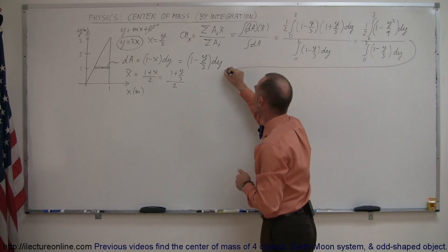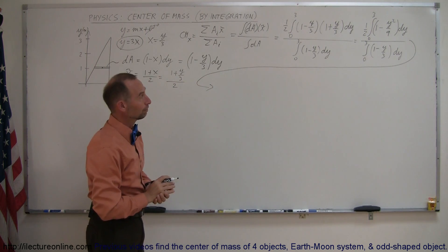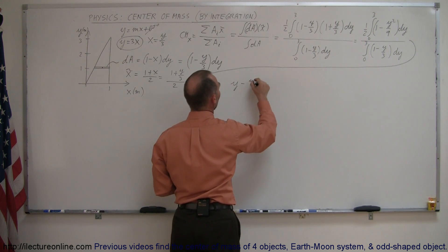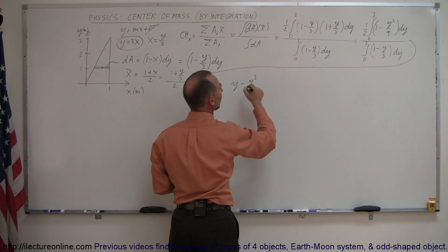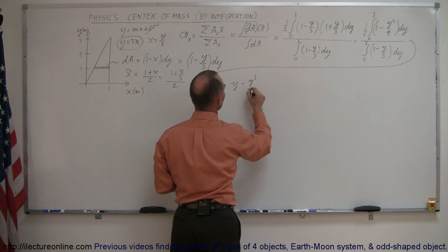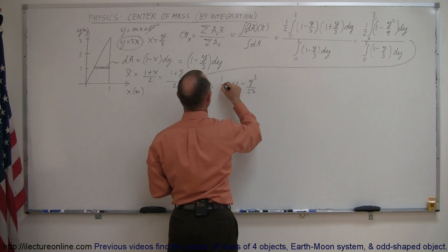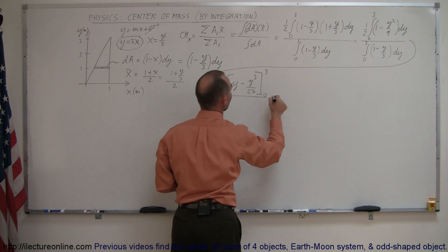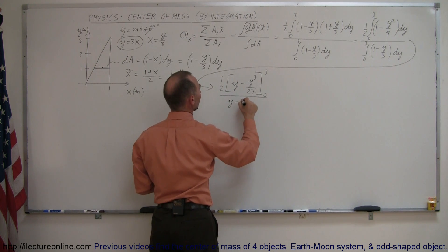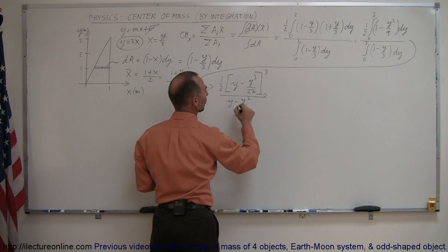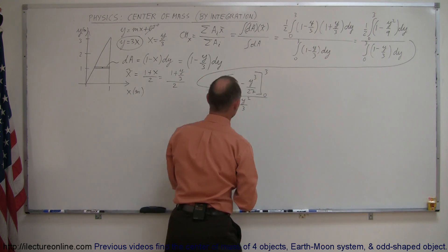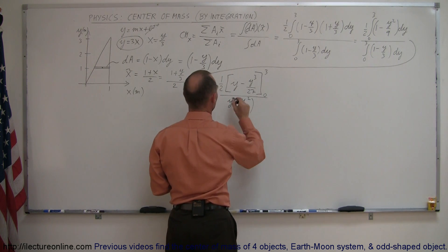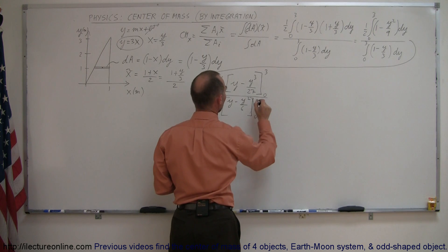Now I'm ready to integrate this, so I'll come over here and do the actual integral. The integral of 1 dy is simply y, and the integral of y squared over 9 is y cubed over 27. I still have the 1 half in front — I can't forget about that — and I have to evaluate from 0 to 3, and divide that by the integral in the denominator, which is y minus y squared over 6.